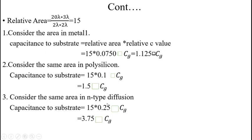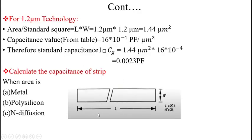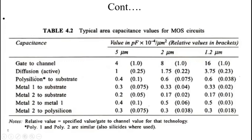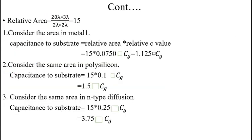For the n-diffusion layer, the overall capacitance = relative area × relative capacitance value = 15 × 0.25 □CG = 3.75 □CG. For the answer in picofarads, replace □CG with 0.01 pF and simplify. In this way we estimate the capacitance of the different layers. Thank you.